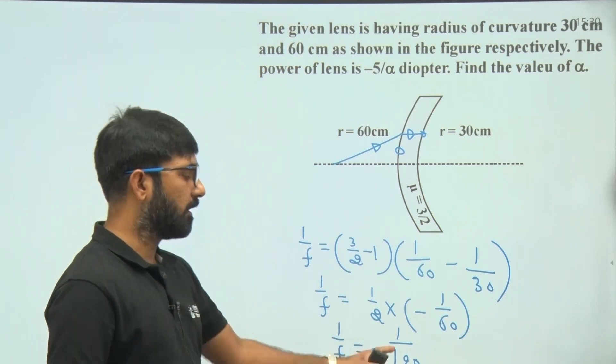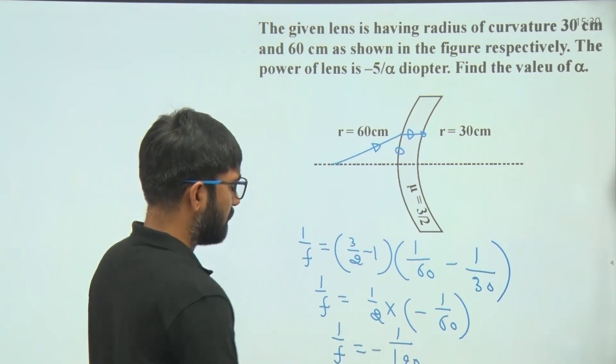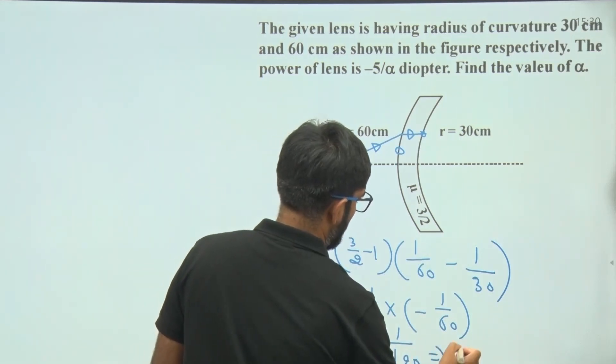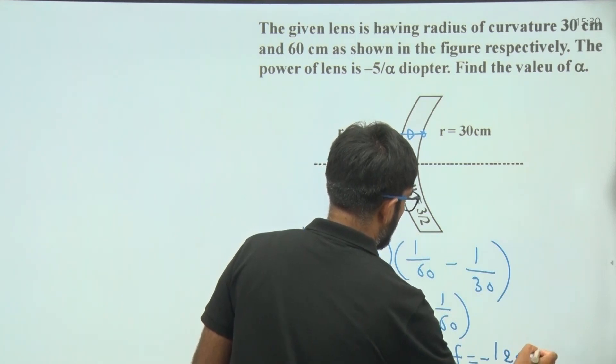Here f is in centimeters. f is minus 120 centimeters. If we solve this, we get f equal to minus 120 centimeters.